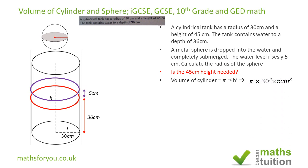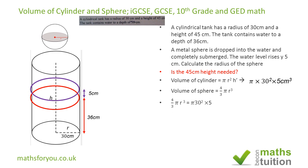So we get π times 30 squared times 5 cubic centimeters. The volume of a sphere is 4/3 π r cubed. If we equate these two expressions, we get 4/3 π r cubed equals π times 30 squared times 5. The π's will cancel out from both sides.